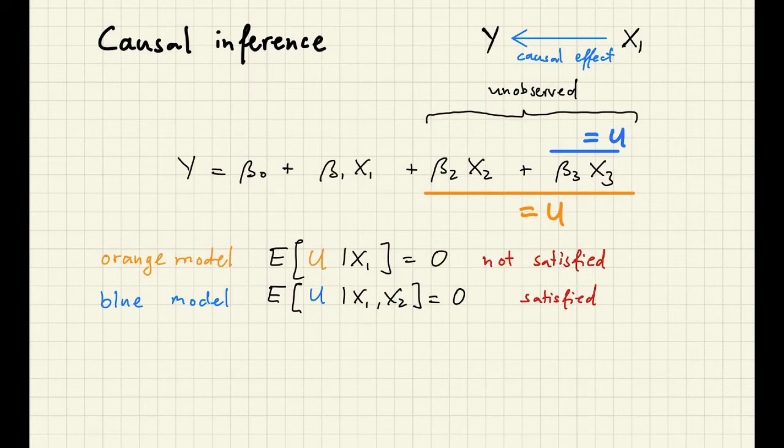We are going to proceed with the blue model, but we will have to deal with the fact that X2 is not actually observed. So now let's collect this unobserved part in a random variable A. Now I want to point out that here in this example, there is only one input X2 feeding into this error term U.